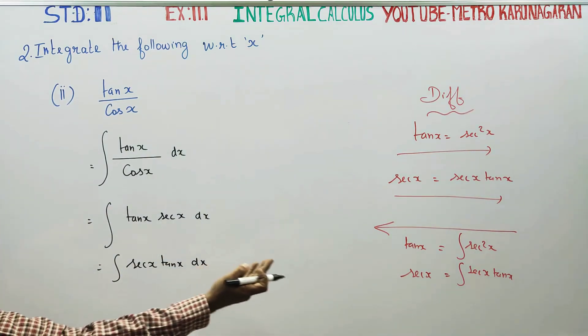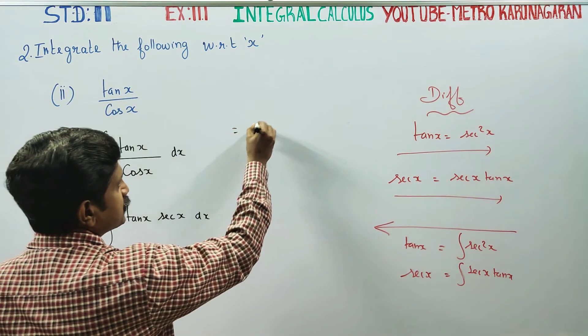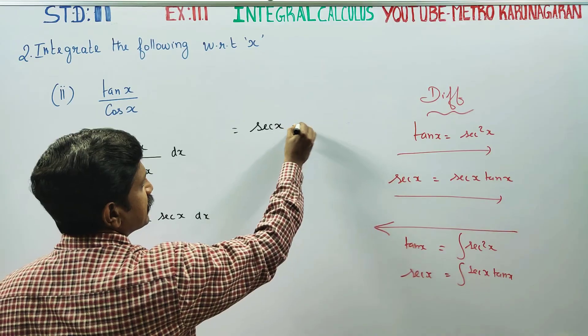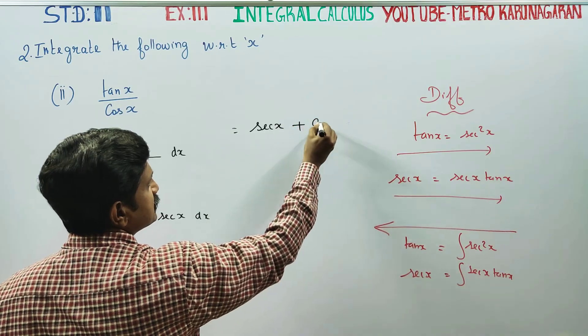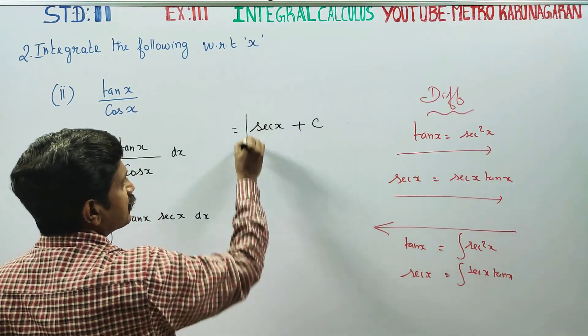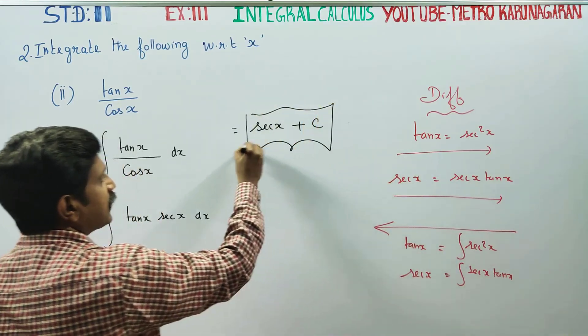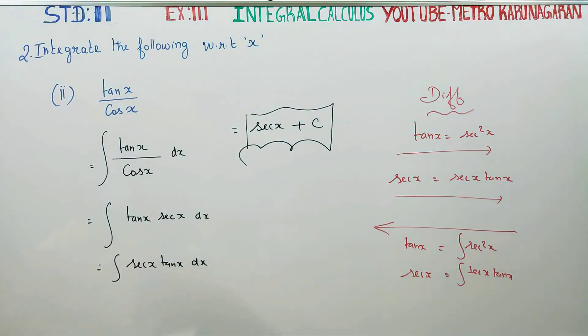So integrating secant x tan x — applying the opposite process — we get secant x plus C, where C is the integration constant. This is your final answer. Thank you.